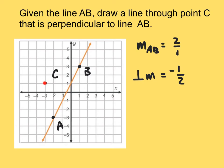Starting at point C, I'm going to go down one to the right two and plot a point. I'm going to go down one to the right two and plot a point, and continue that trend going in both directions. Then I can connect these and draw a line between those points. What we've created is two lines that are perpendicular — they intersect and make 90 degrees. And that's the idea.